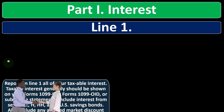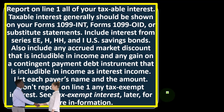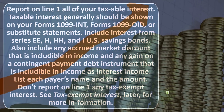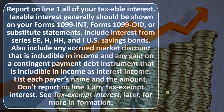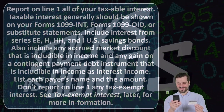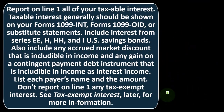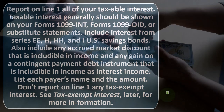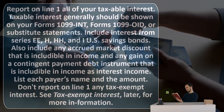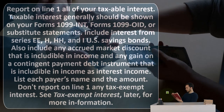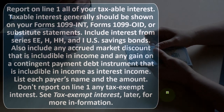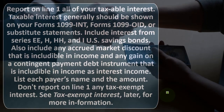For Schedule B Part 1 — Interest — line one: report all of your taxable interest. Taxable interest should generally be shown on Forms 1099-INT, 1099-OID, or substitute statements. Include interest from EE, HH, and I savings bonds, any accrued market discount includable in income, and any gain on a contingent payment debt instrument includable in income as interest. Do not report any tax-exempt interest on line one, as this is the taxable line item.